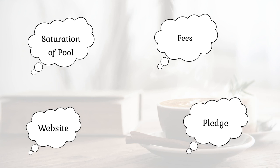Pledge. When a stake pool operator puts his own ADA into the stake pool, we call it a pledge. Pools with a high pledge want to show they are committed to their work, because the owner shows he is financially motivated to keep the pool running well. As a general rule of thumb, look for stake pools with at least 10,000 ADA pledge. Also, for true decentralization in Cardano, it is appreciated to delegate to smaller pools.